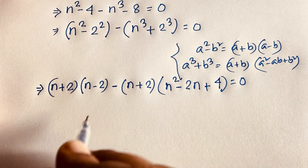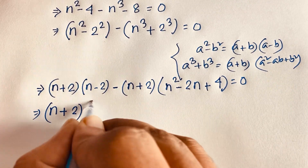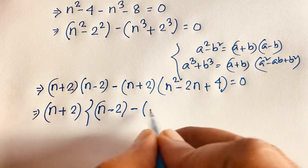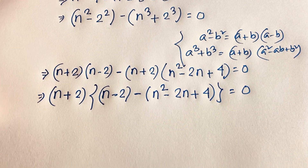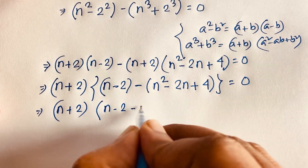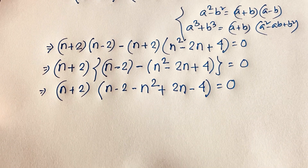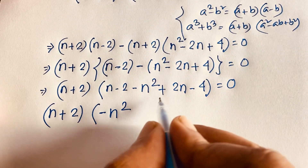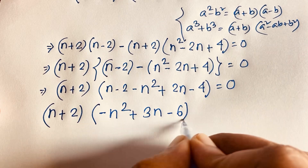Now (n+2) is a common factor in both terms. Factoring it out, we get (n+2) times [(n-2) minus (n squared minus 2n plus 4)] equals 0. Expanding inside the bracket: negative n squared plus 2n plus n minus 4 minus 2 gives us (n+2)(negative n squared plus 3n minus 6) equals 0.